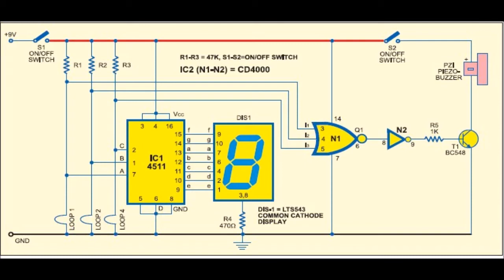When any loop is broken, the output of NOR gate N1 goes low while the output of gate N2 goes high. Transistor T1 conducts and the buzzer sounds to alert you.